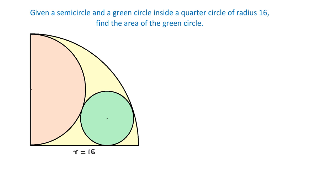In this problem, we will find the area of the green circle, and for this, first we have to find the radius. The green circle and the quarter circle are internally tangent circles, and this is the point of tangency.